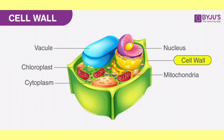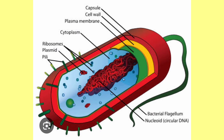Next is the cell wall. The cell wall is an additional layer surrounding the cell membrane, required by plants for protection. Plant cells need protection against variation in temperature, high wind speed, atmospheric changes, etc. An important note: the cell wall is present only in plant cells and is absent in animal cells, except in bacteria.